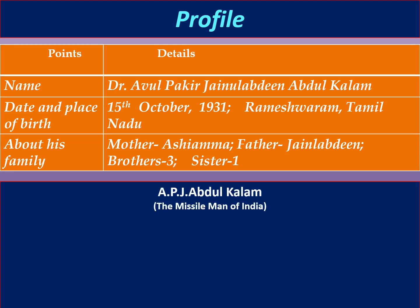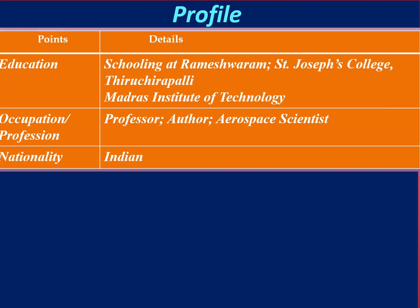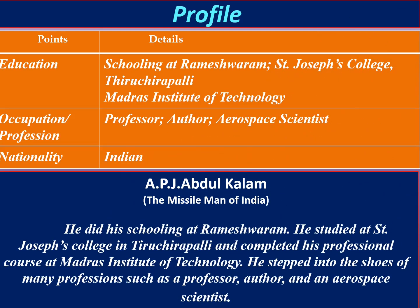Here is the profile of APJ Abdul Kalam — The Missile Man of India — written in paragraph form. Each para deals with two or three points. First para: Dr. Abul Pakir Jainulabdin Abdul Kalam was born on 15th October 1931 at Rameshwaram in Tamil Nadu. His mother was Aishiyamma and his father was Jainulabdin. He has three brothers and one sister. Second para covers education and profession: He did his schooling at Rameshwaram, studied at St. Joseph's College in Tiruchirapalli, and completed his professional course at Madras Institute of Technology. He stepped into the shoes of many professions such as professor, author, and aerospace scientist.